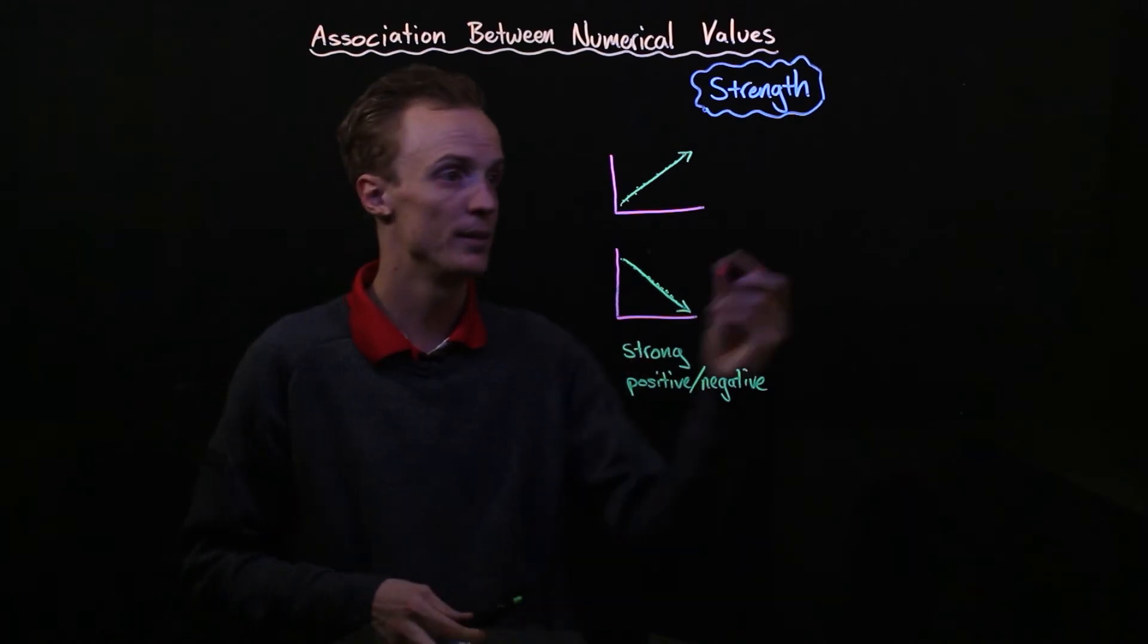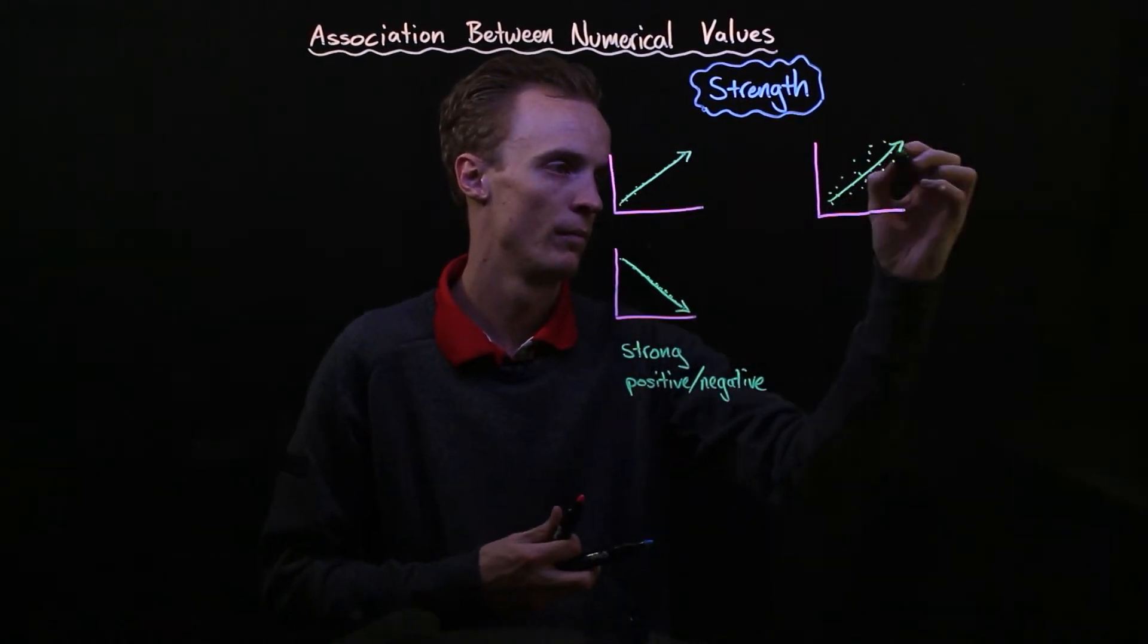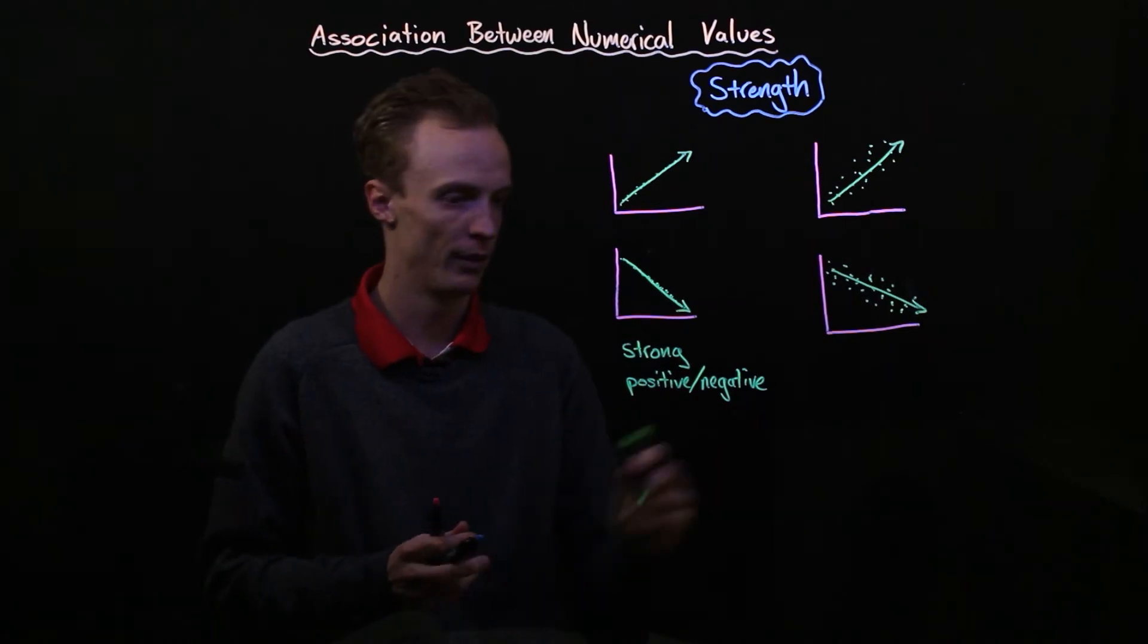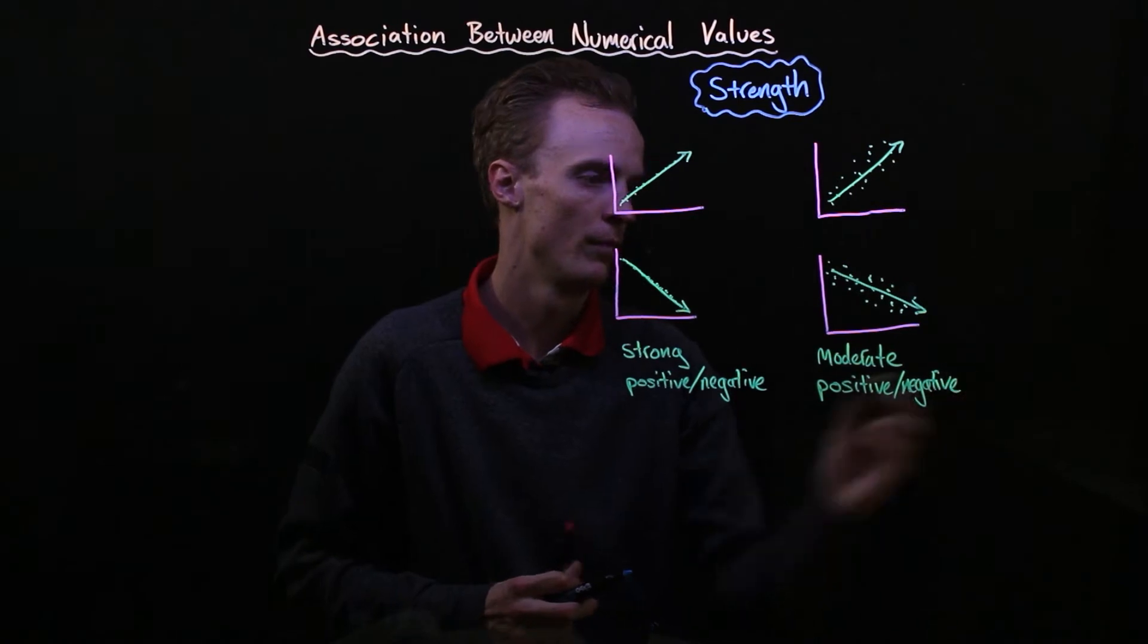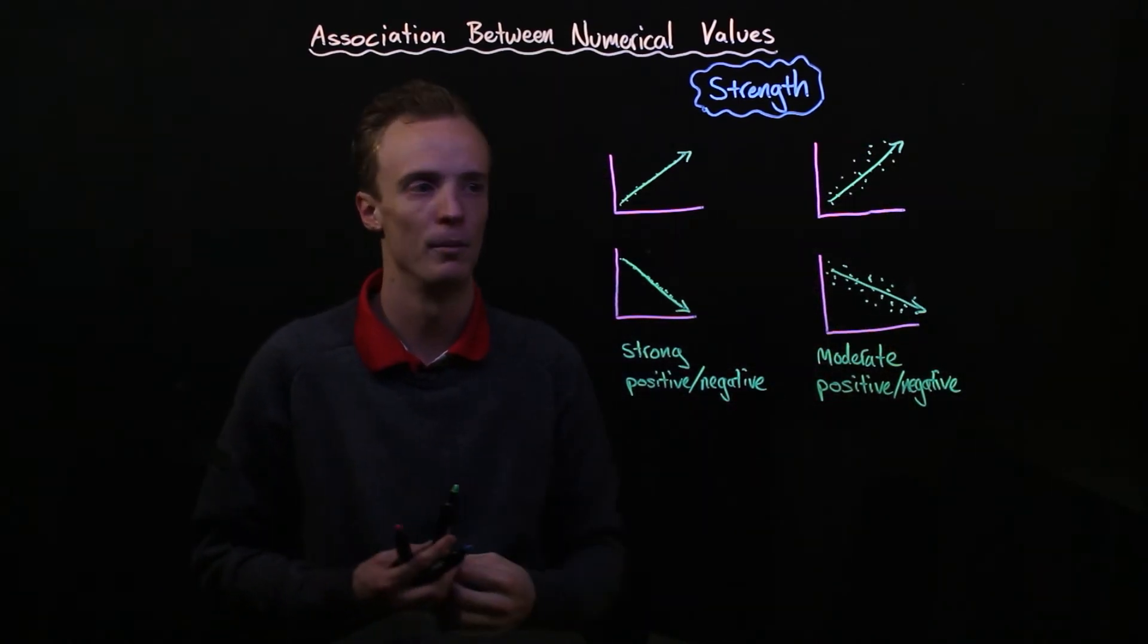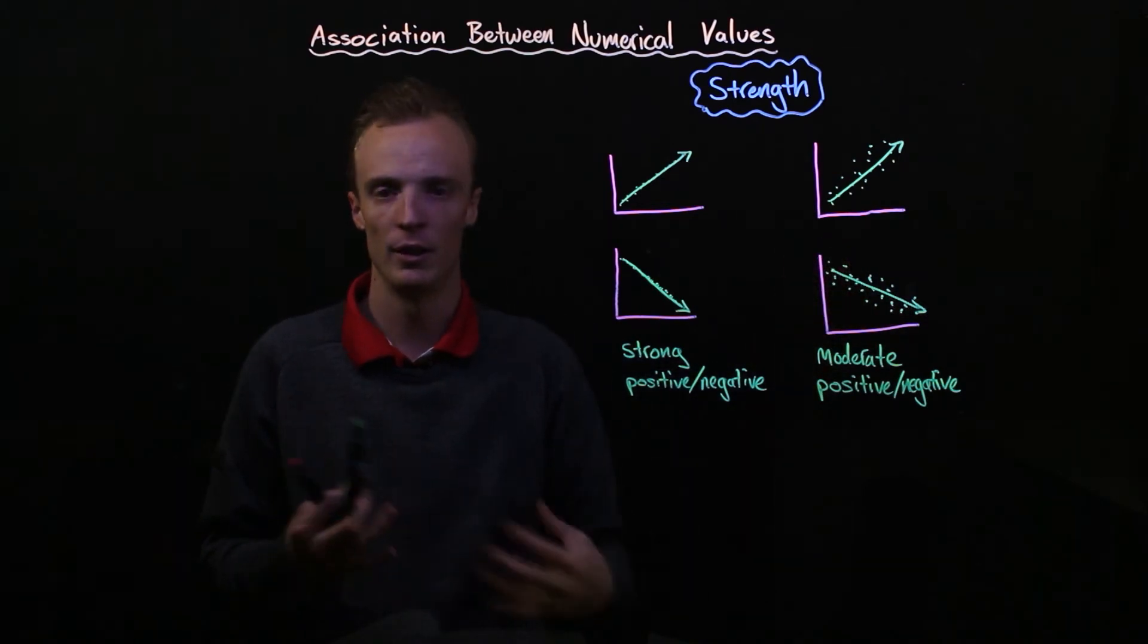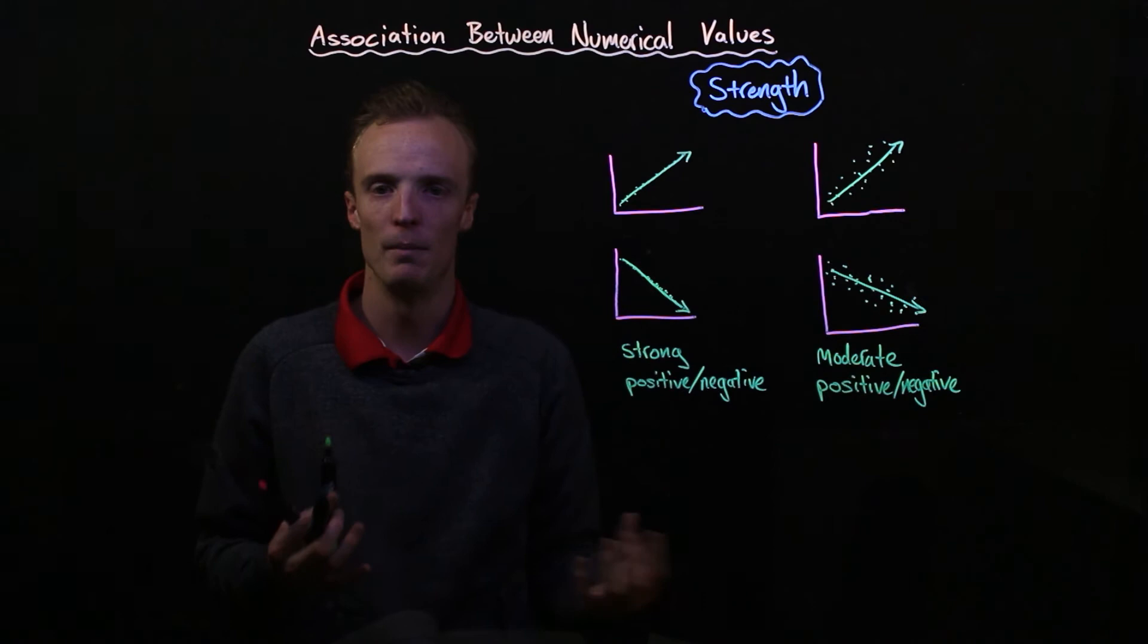The next one is what we call a moderate strength. We've got a moderate positive example and a moderate negative example. You can still definitely see that it's got a general trend either up or down so positively or negatively but those points are scattered a little bit more.